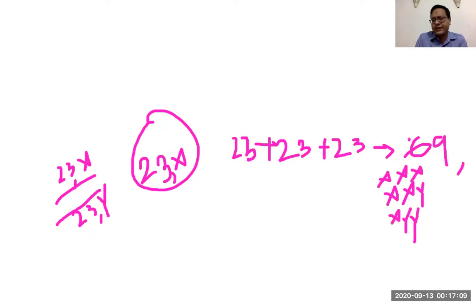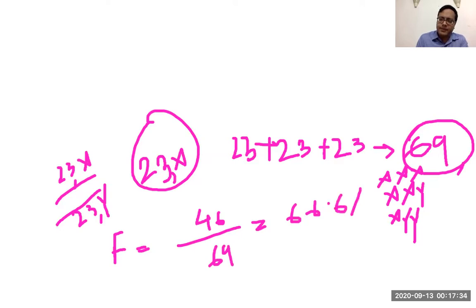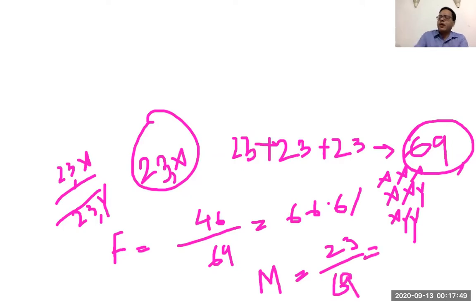The key here is to understand not just that it is triploid, but out of 69 chromosomes, how much is contributed by the father. The father's contribution is 46 out of 69, which means approximately 66.6%. And what is the contribution of the mother? 23 out of 69 — that means one-third, 33.33%.